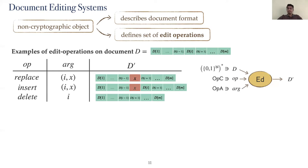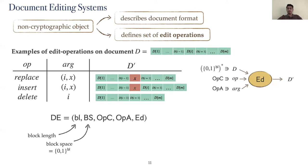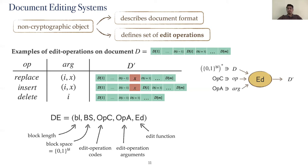A document editing system is a tuple which contains the block length; the block space, which we assume to be the set of bit strings that have length equal to multiples of the block length; the set of edit operation codes, which stores the types of edit operations supported; the set of edit operation arguments, elements of which specify details of how the edit operation should act on the document; and the edit function, which takes the edit operation code, operation arguments, and the document and returns an updated document.